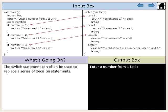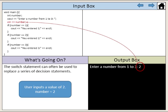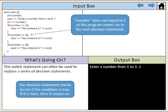These decision statements can be combined into one switch statement. The user enters the value 2, which is then assigned to the variable number. The decision statement checks to see if the condition is true. If it is false, then it moves on. Number does not equal 1, so the program moves on to the next decision statement.